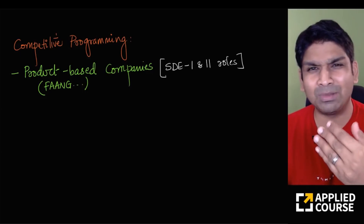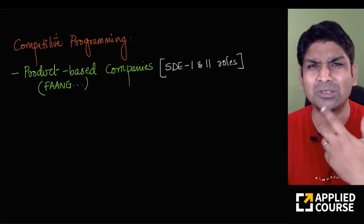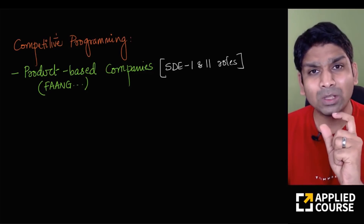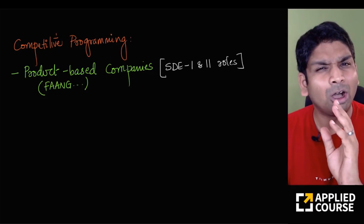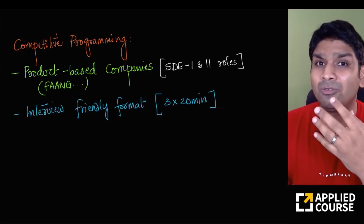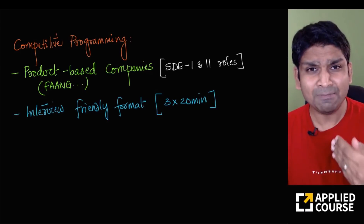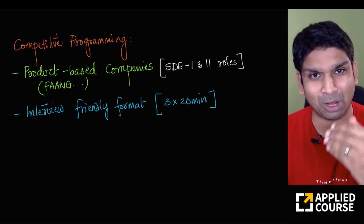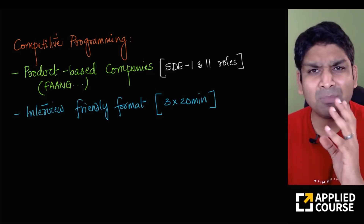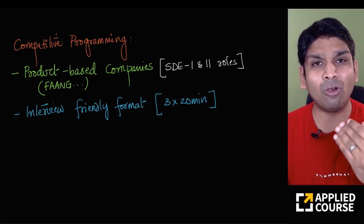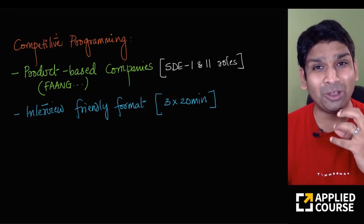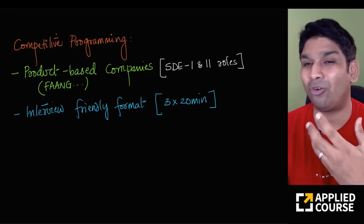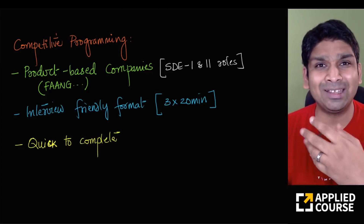Competitive programming is also often used by the top product-based companies — also called FAANG: Facebook, Amazon, Apple, Netflix, Google. These top companies use it a lot for their entry-level software engineers, often referred to as SDE-1s, and also for SDE-2 roles, which typically involve two to three years of work experience. It is very interview-friendly: an interviewer can ask three well-defined problems, give about 20-25 minutes per question, and assess how well you program, debug, handle boundary cases, and write optimized code.